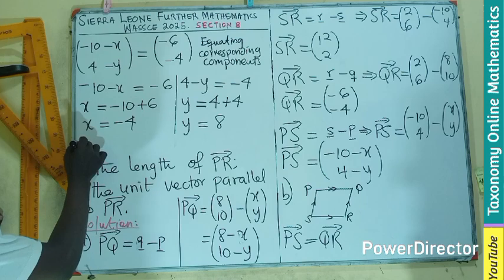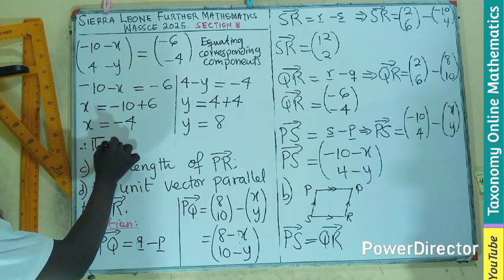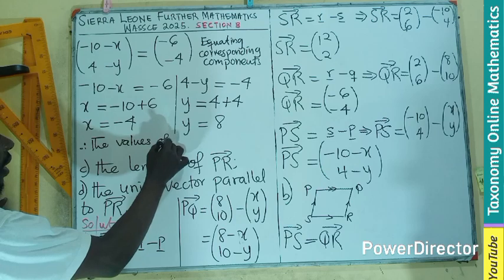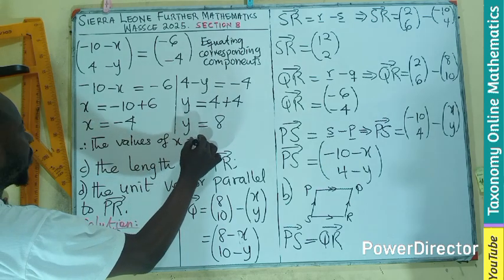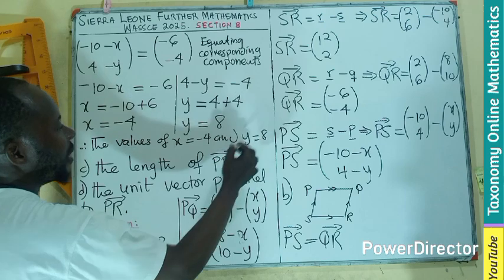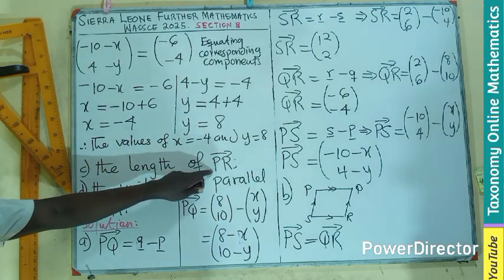Therefore, the values of X is -4 and Y is 8.